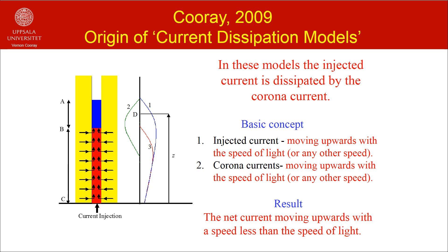The model has several interesting features. Both the injected current and the corona current travel upwards with the speed of light. The corona current being of opposite polarity to the injected current, it will neutralize or dissipate part of the injected current. The result is that the net current propagates upwards with speed less than the speed of light. In the diagram, the injected current is shown in blue, the upward moving corona current in green, and the net current in red. If you select any other speed, still the net current propagates with a speed less than the speed selected for the corona and injected current.